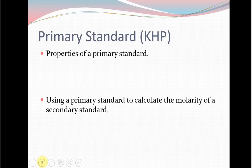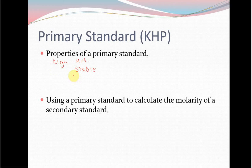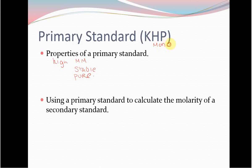KHP is a primary standard — a really commonly used one. A primary standard is a high molar mass compound that is highly stable, will not degrade over time, is highly pure, and reacts in a very predictable way. We know that KHP is a monoprotic acid and will react with NaOH in a one-to-one ratio.